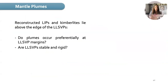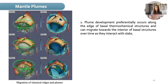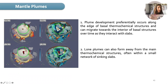The last work on mantle plumes is by Genchi, who looked at the evolution of mantle plumes and LLSVPs. The questions he wanted to answer are: do plumes occur preferentially at LLSVP margins, and are the LLSVPs stable and rigid through time? They found that plume development preferentially occurs along the edges of the LLSVPs, and can migrate toward the interior of the basal structure over time when they interact with slabs. They also showed that long plumes can form away from thermochemical structures, often within a small network of sinking slabs.